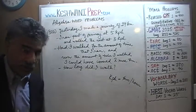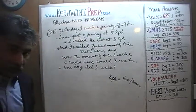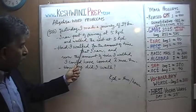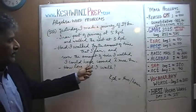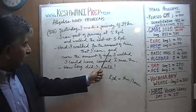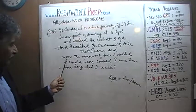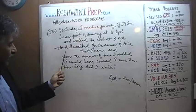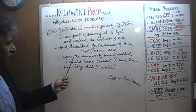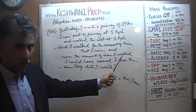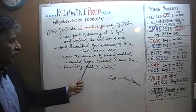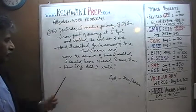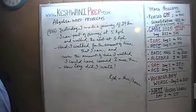They go on to tell us that had I walked for the amount of time that I ran, and run - the past perfect of run is run - had I run the amount of time that I walked, I could have covered 2 more kilometers. The question simply is: how long did I walk?